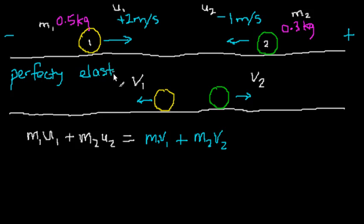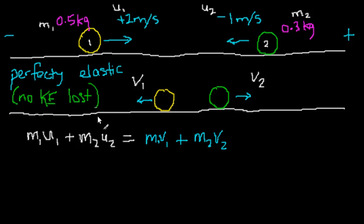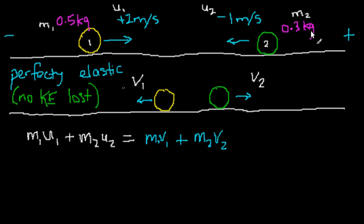Now, remember what perfectly elastic means: no kinetic energy is lost. And this condition gives us another equation. Let's see how this perfectly elastic condition provides that second equation. No kinetic energy loss simply means that the kinetic energy before colliding is the same as the kinetic energy after colliding, so we can write down an equation for that.